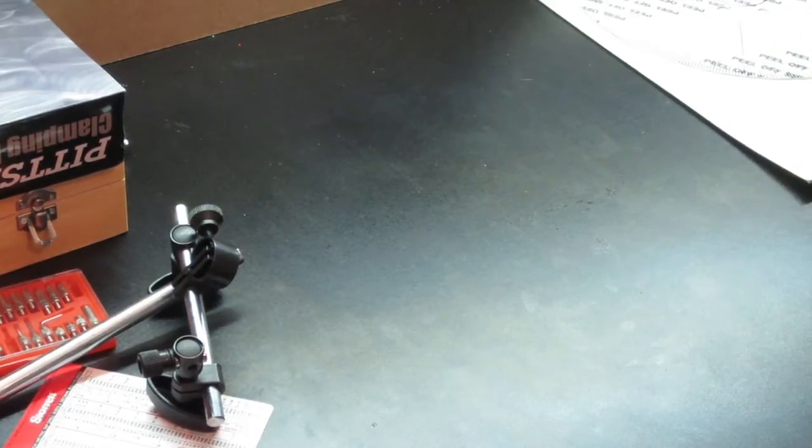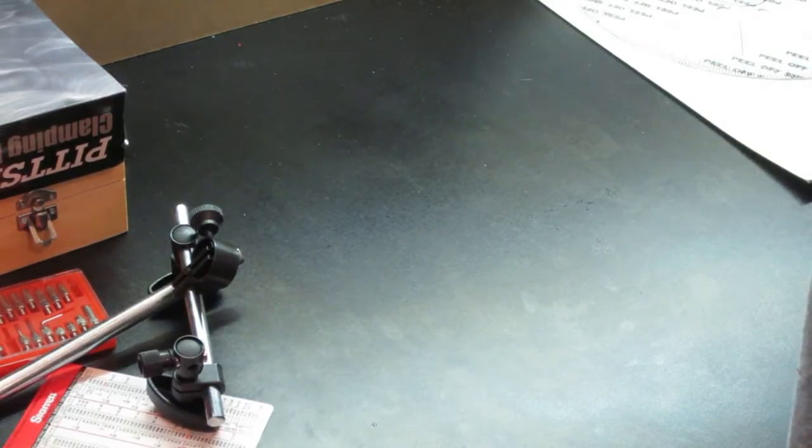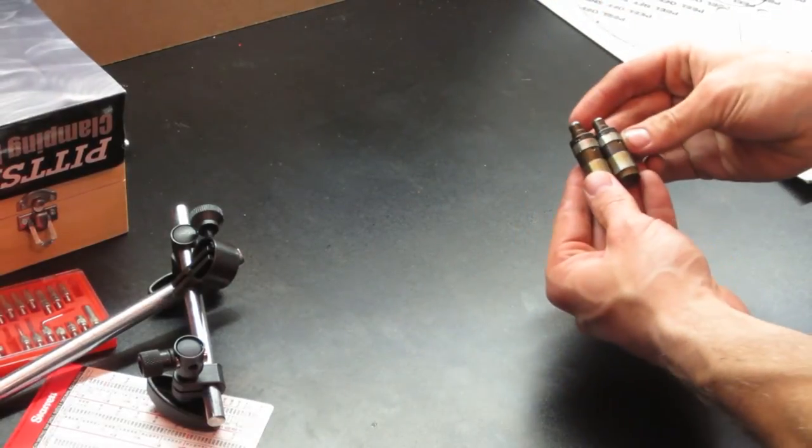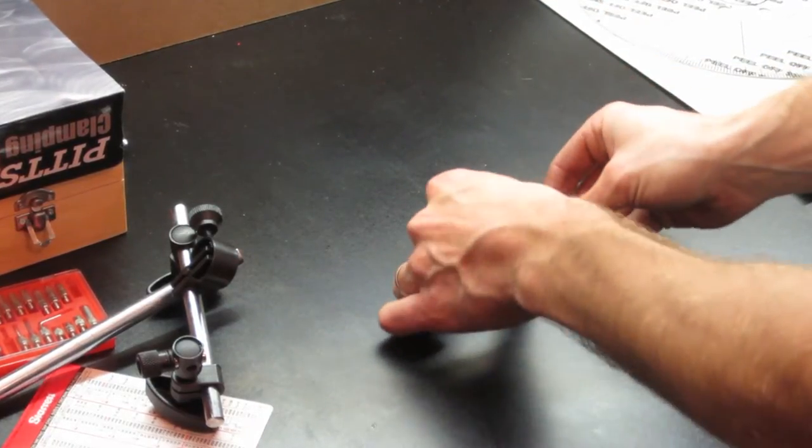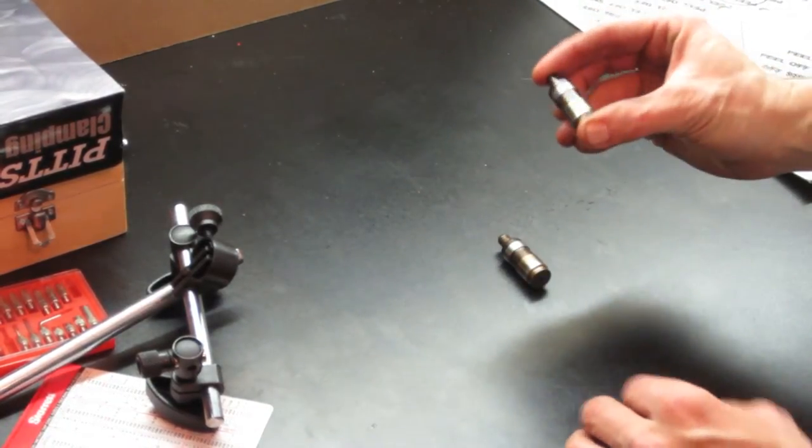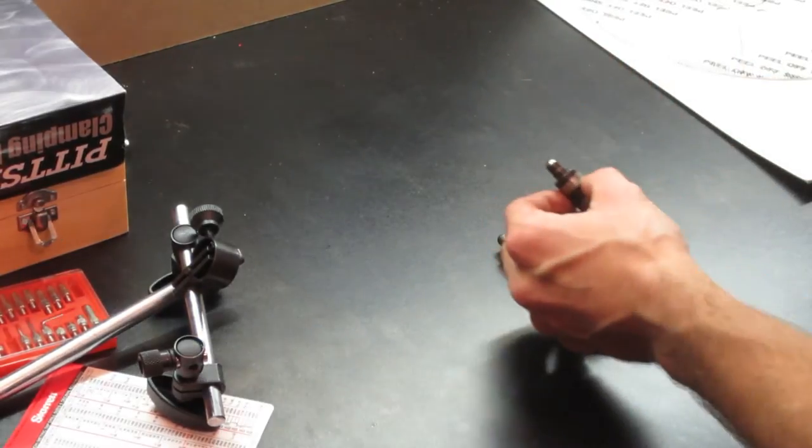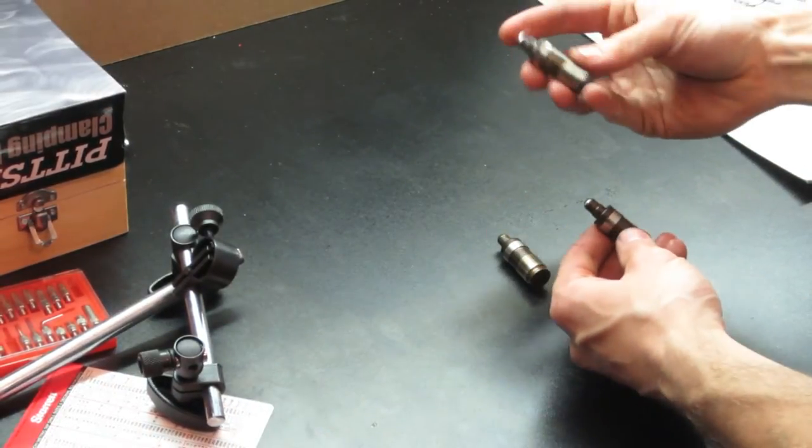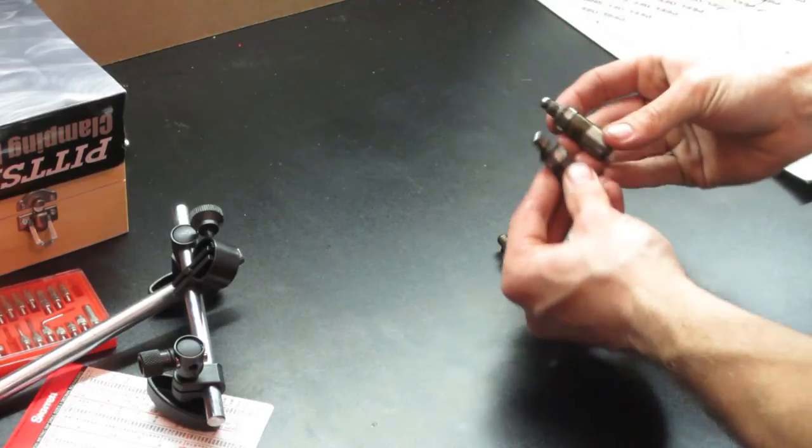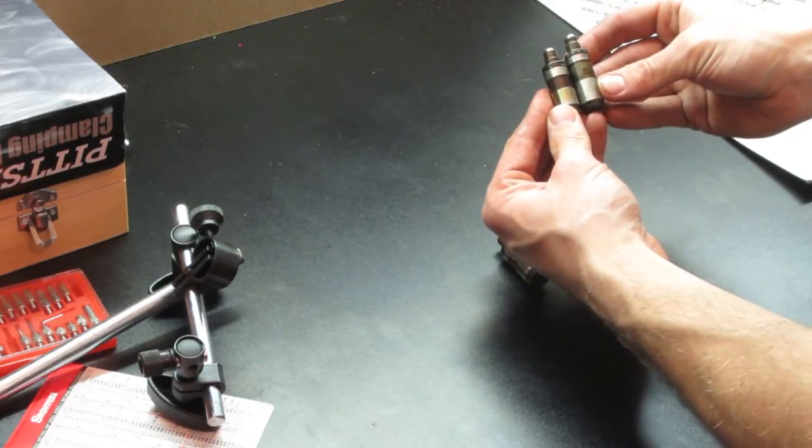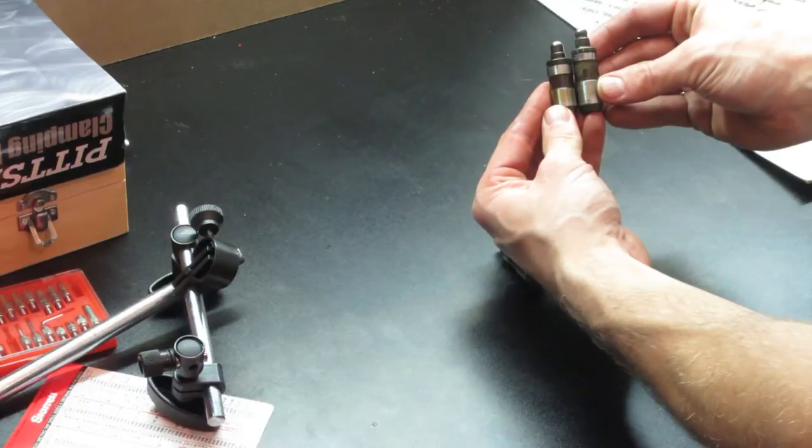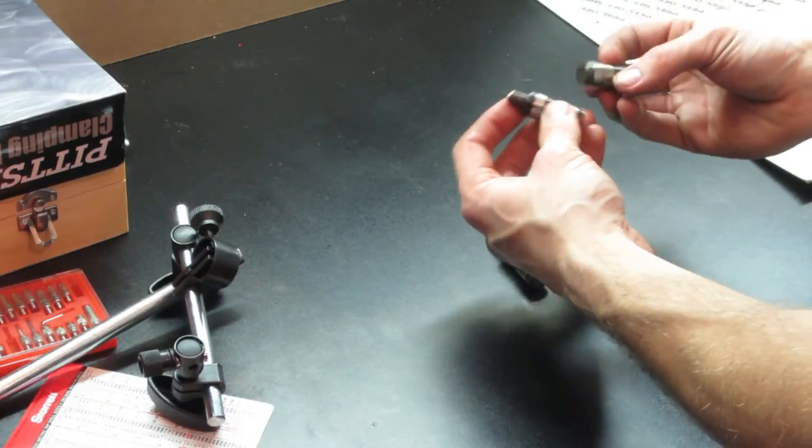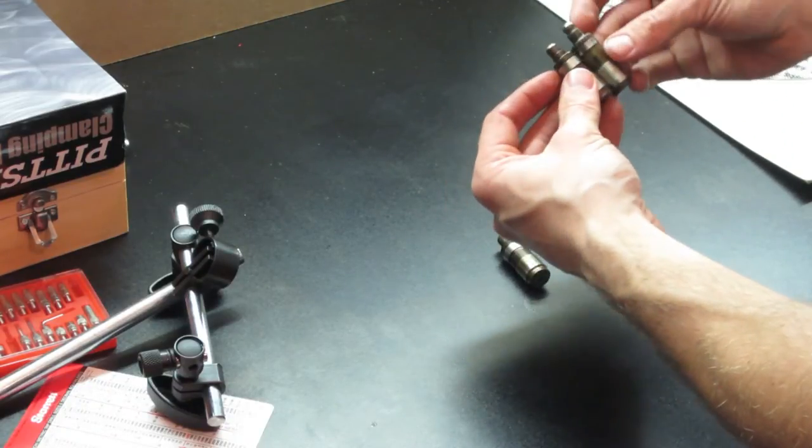Next up, we need some solid lifters to adjust the valve train to zero lash. We start with these two lifters from a 420A. That's right, a 420A. Compared to this lifter out of a 1G head, you can see that the 420A lifter is shorter, but the machine diameter of both lifters are within a few thousandths. The shorter lifter should allow us to utilize lock nuts with the finished product.